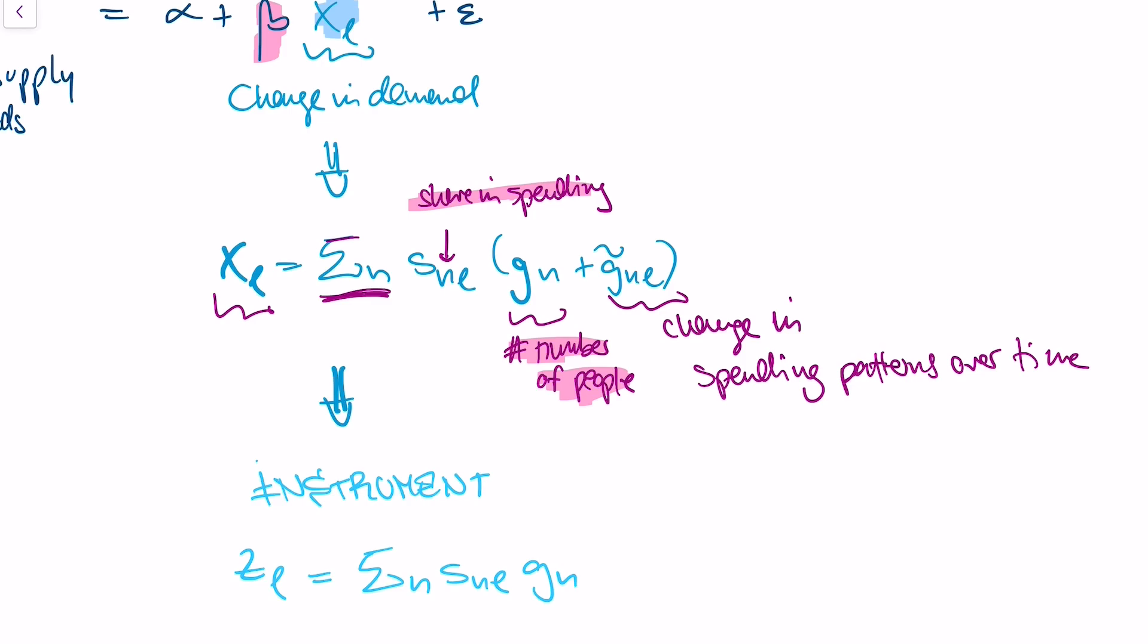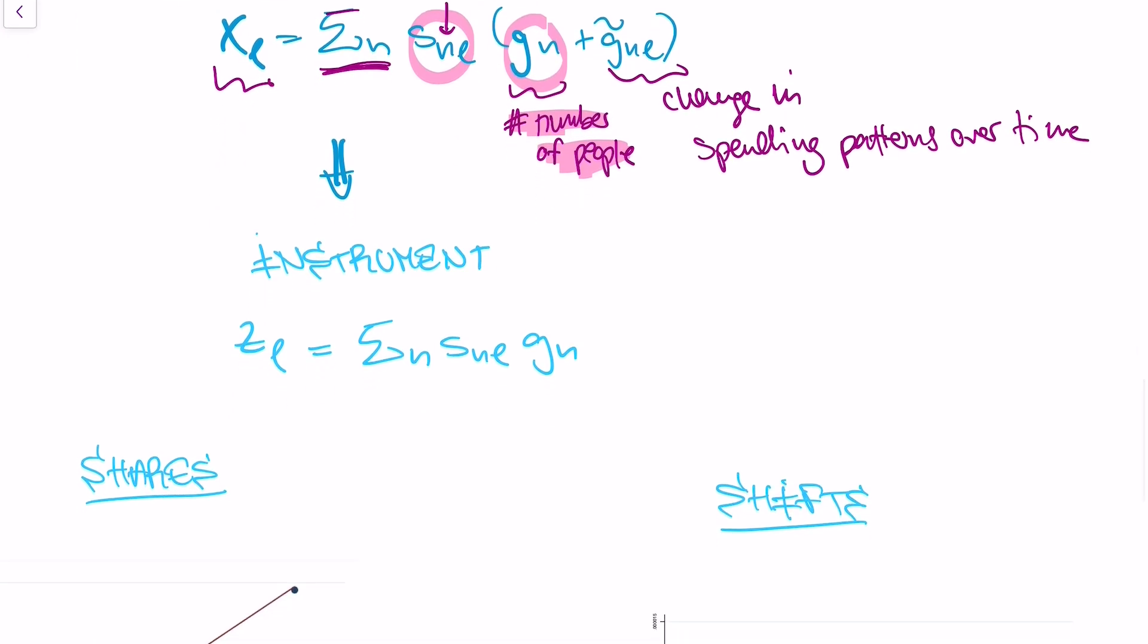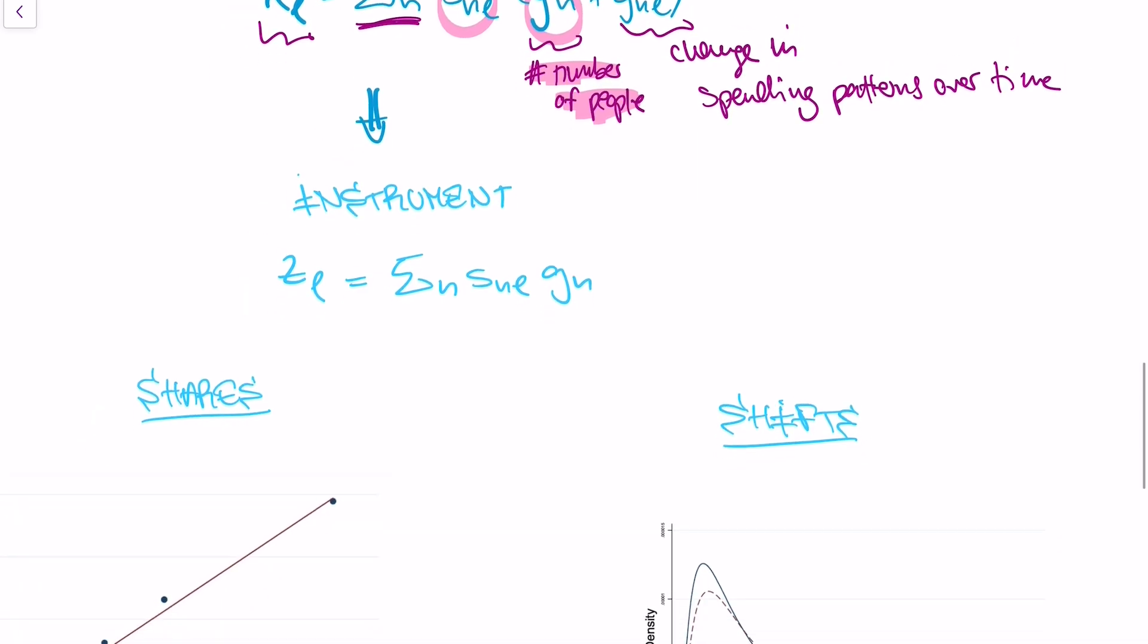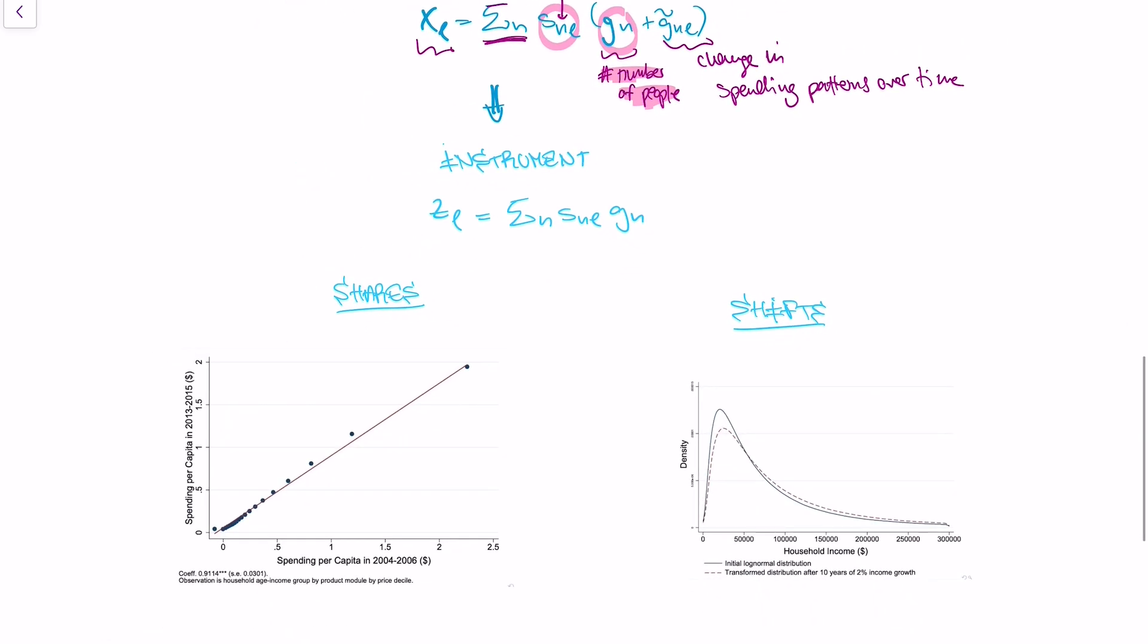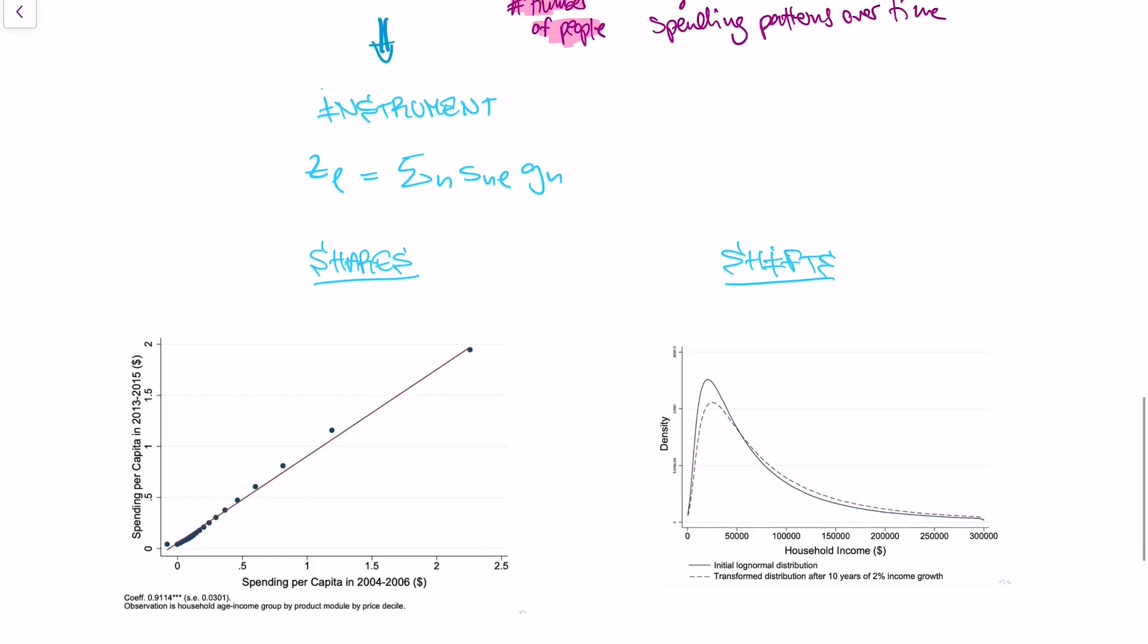So in our instrument, in our shift-share IV instrument, we're only taking the first two variables into account. So our instrument is the sum of the shares, the spending shares, for a given product times the change in the number of people. And this is why this instrument is called shift-share design. Our instrument sums up the shifts and the shares.